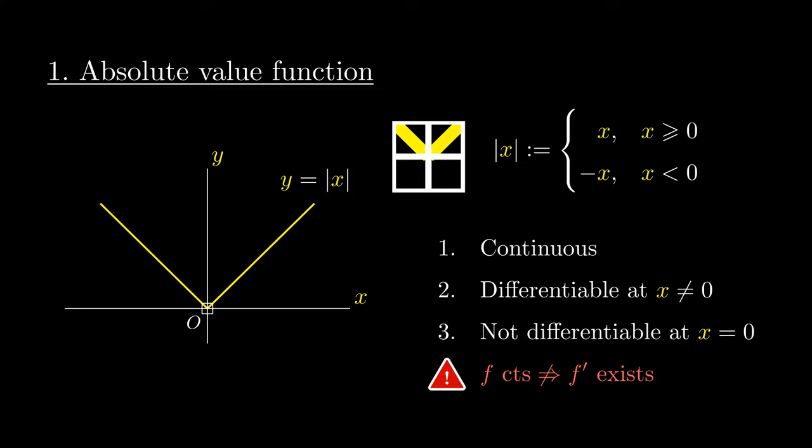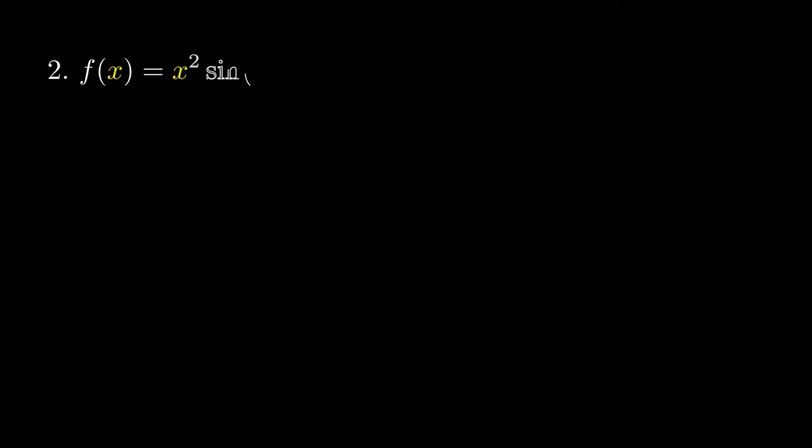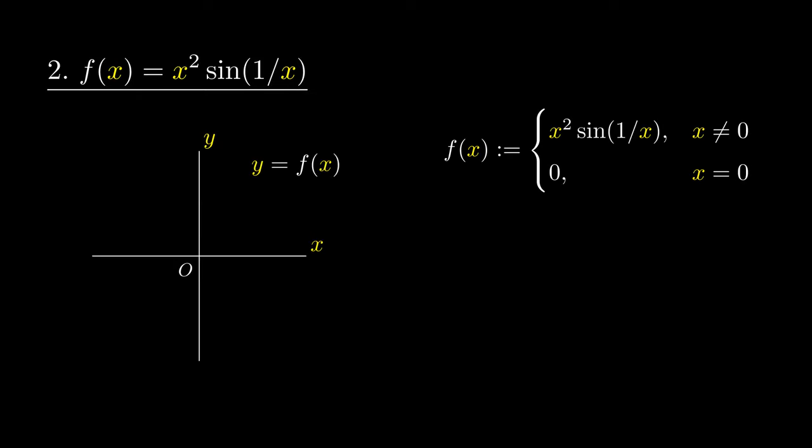We can consider this rather strange x squared times sine of 1 over x when the input is non-zero, and zero when the input is zero. It would wiggle really violently near the origin.